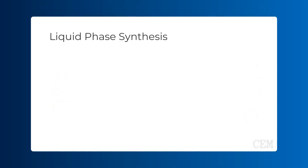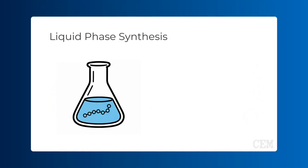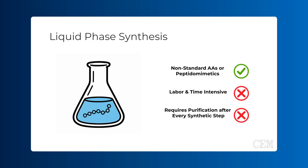Liquid phase peptide synthesis is a method where peptides are assembled by chemical means while suspended freely within a solution. While this approach is compatible with sequences requiring non-standard amino acids and peptidomimetics, it is both labor and time intensive, requiring purification after every synthetic step.